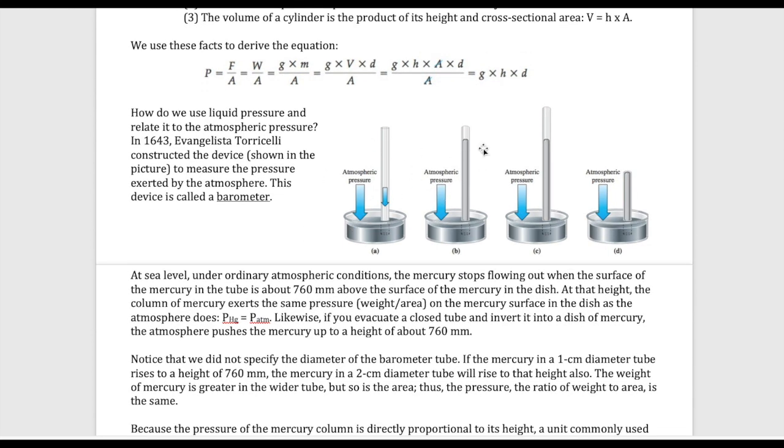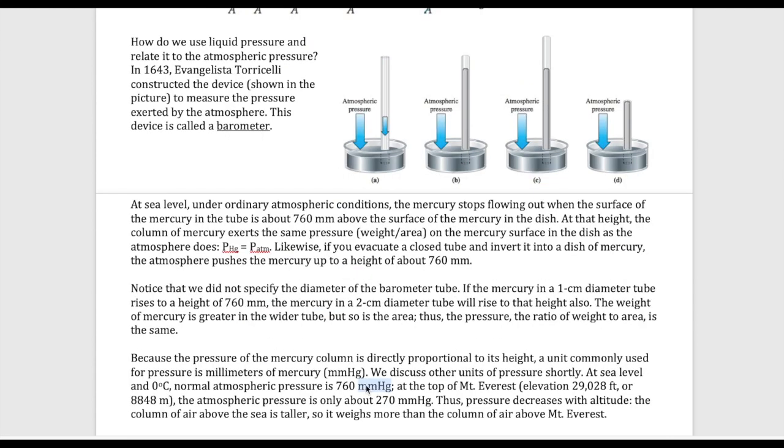If you were to do this experiment at sea level—for example, Santa Monica would be considered at sea level—that would actually give you a height of mercury of 76 centimeters or 760 millimeters. We would say the pressure at sea level is equal to 760 millimeters of mercury. We also use the unit torr, which is equal to millimeters of mercury.